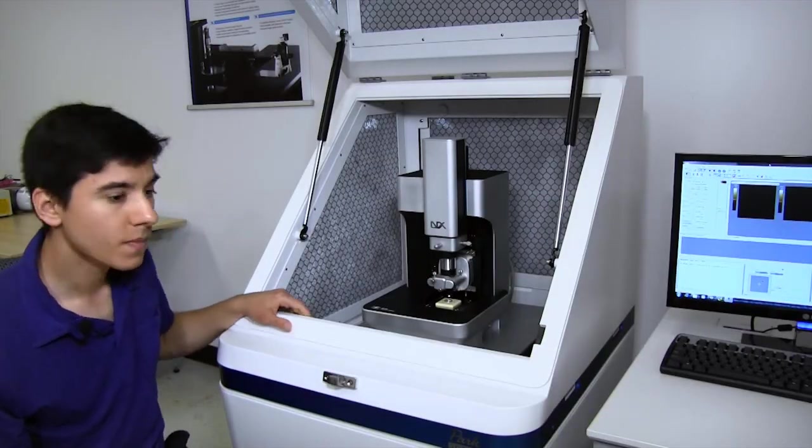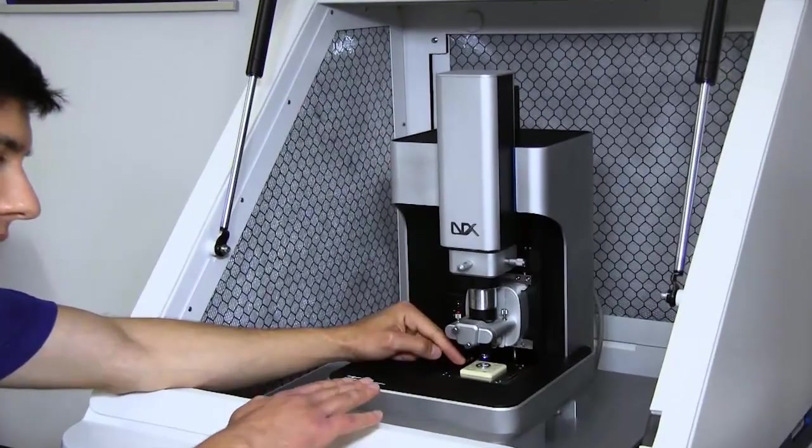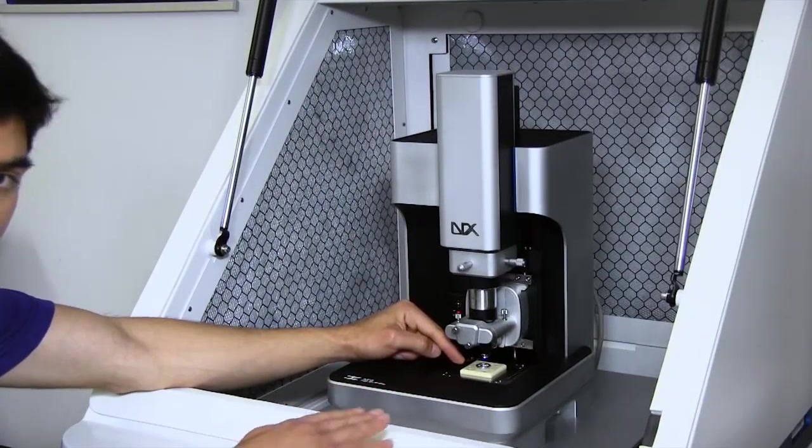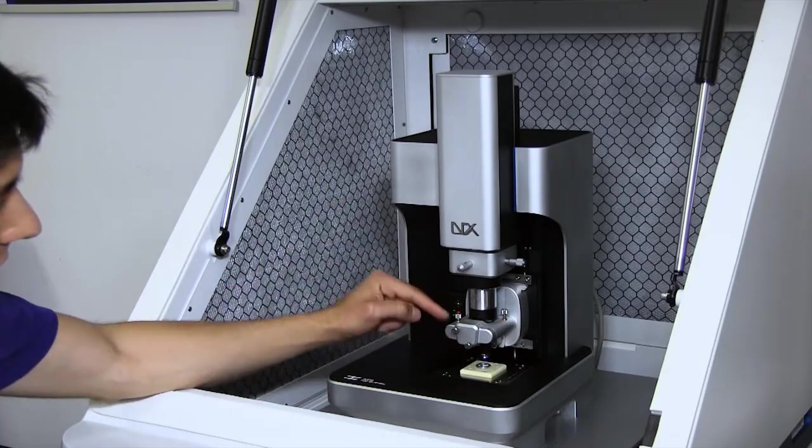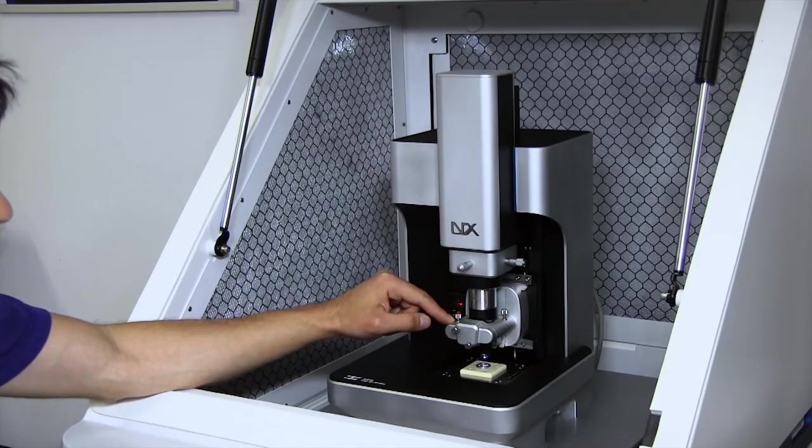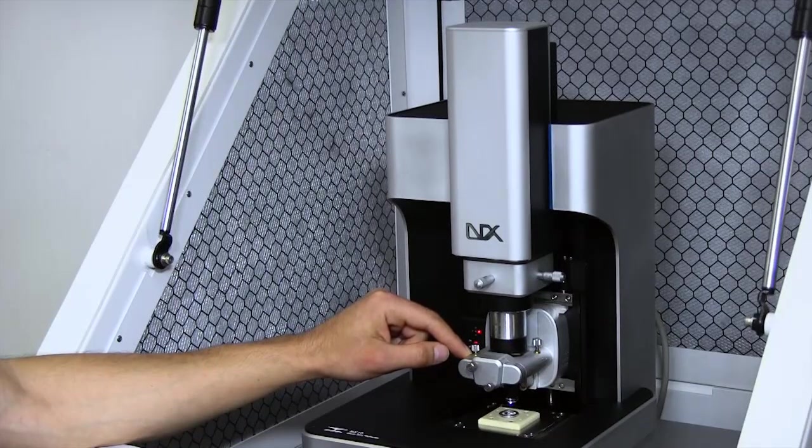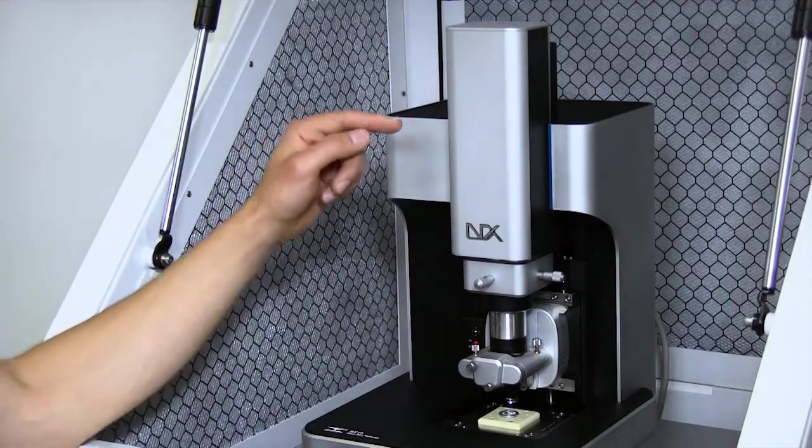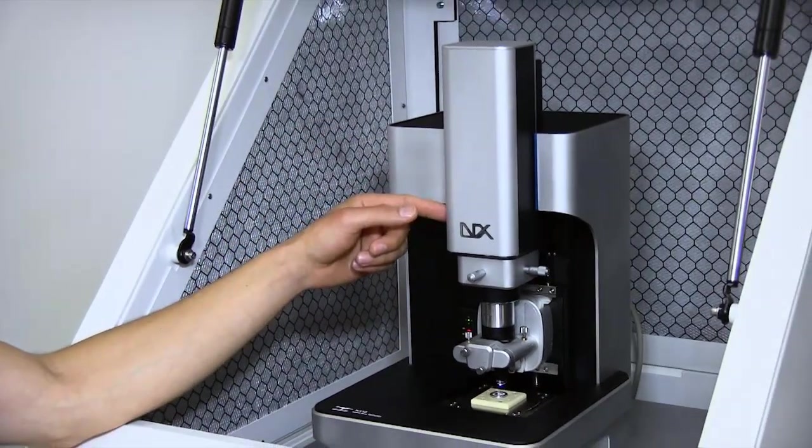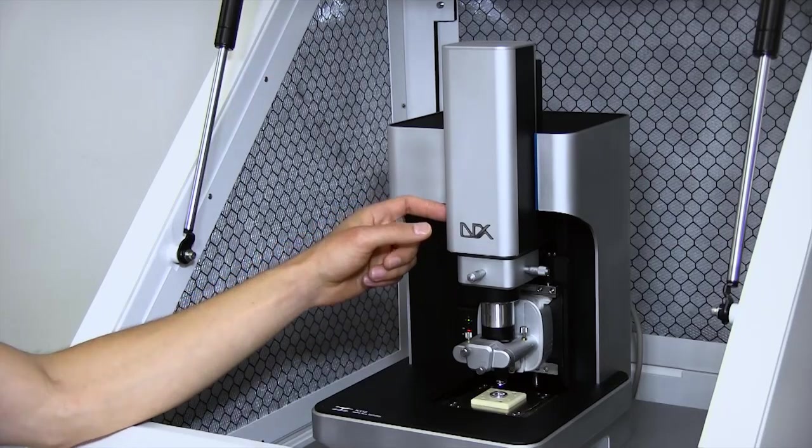The major components of the AFM are a sample stage that scans the sample in the XY plane parallel to the ground, an AFM head containing the probe and all the components required to sense what the probe is doing, and an optical microscope so we can see where we're scanning on the sample and align the probe to a feature of interest.